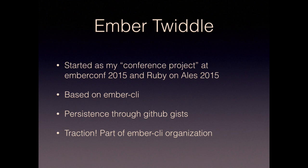Persistence is handled through GitHub Gists, so you don't have to run a server. You just save it to a Gist and you can look at the Gist separately, clone Gists and edit on your local machine, push it back up, fork — all that kind of stuff. This one ended up getting traction, and it's now part of the Ember CLI organization. It's an active project, lots of people are using it.